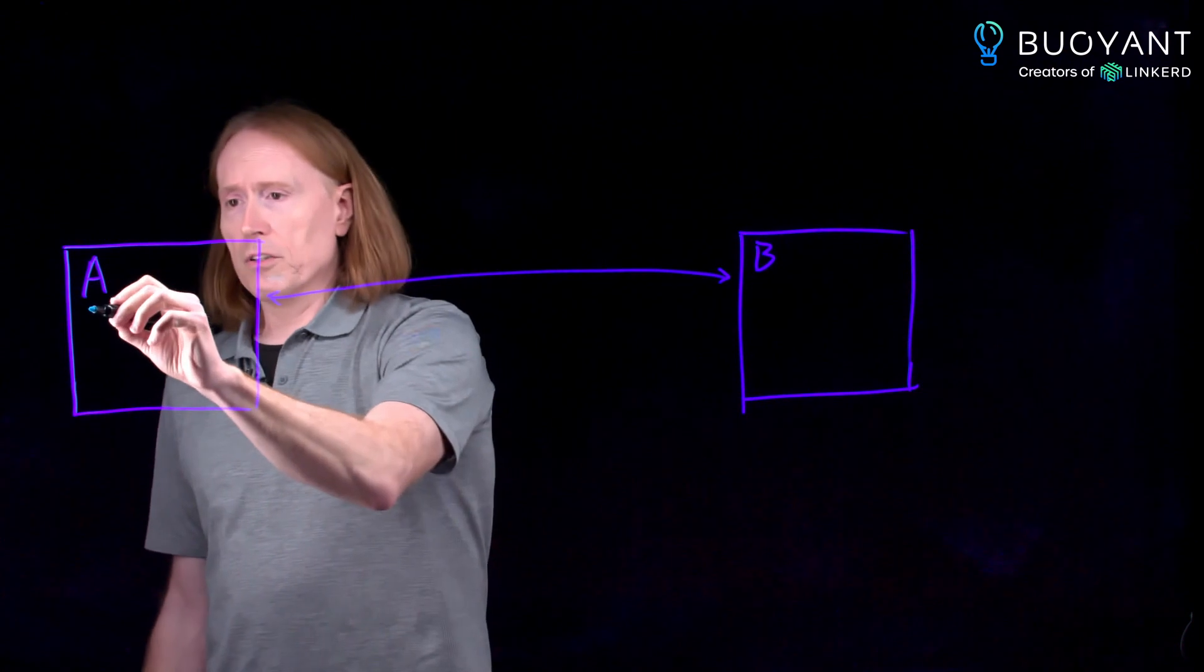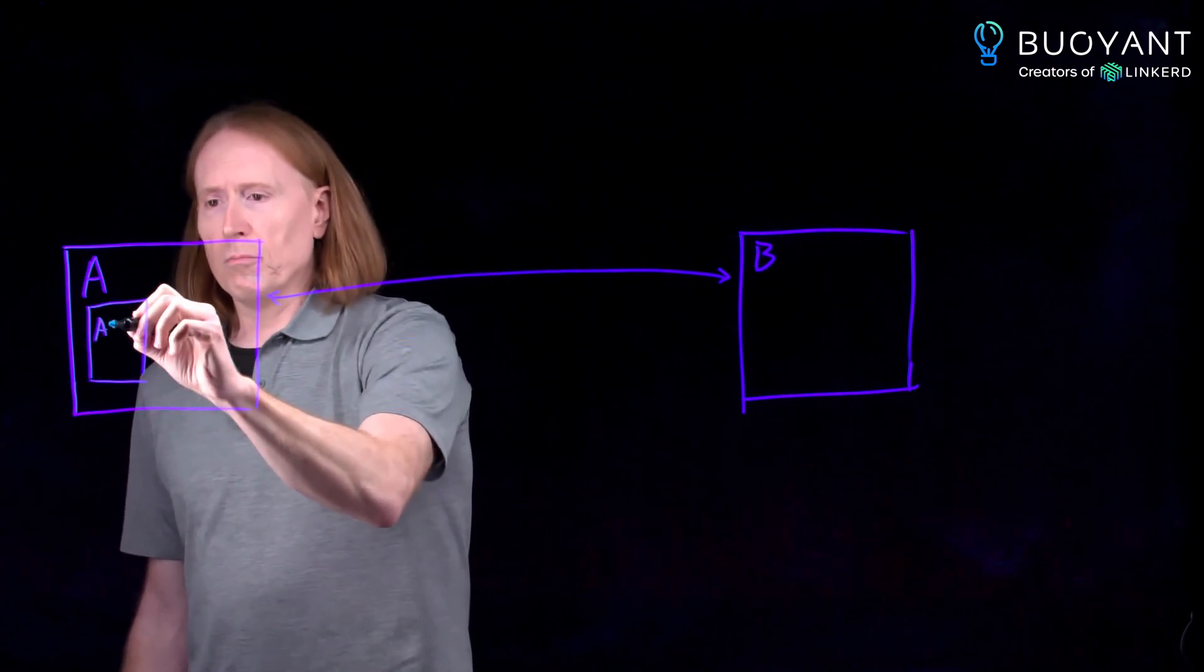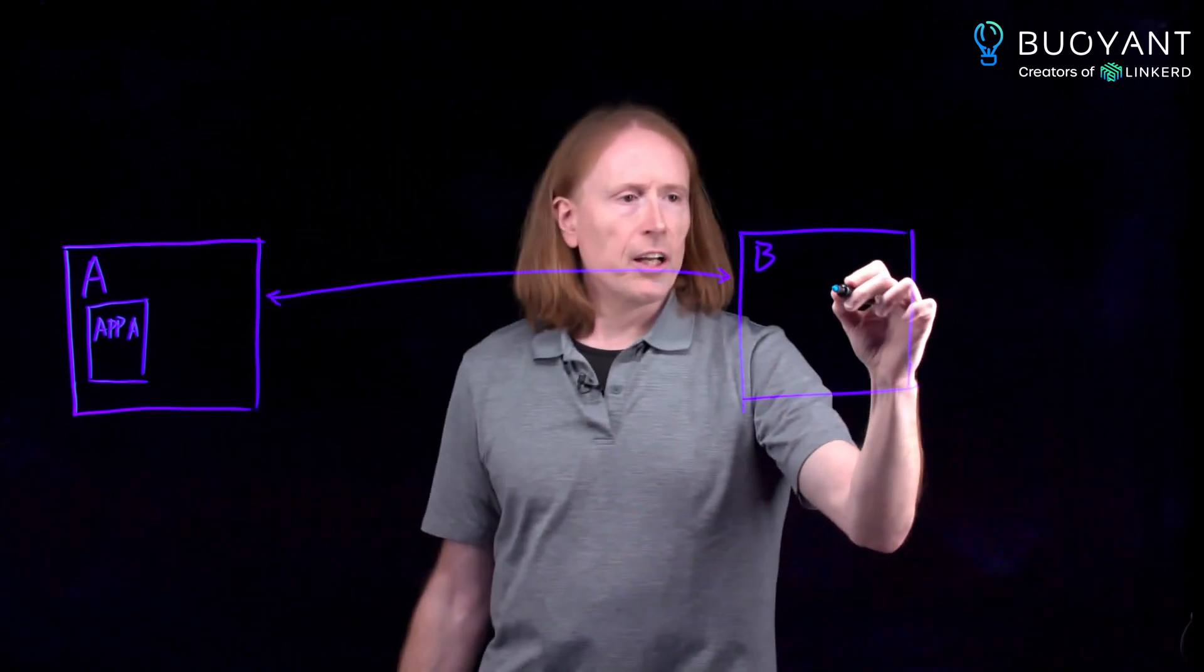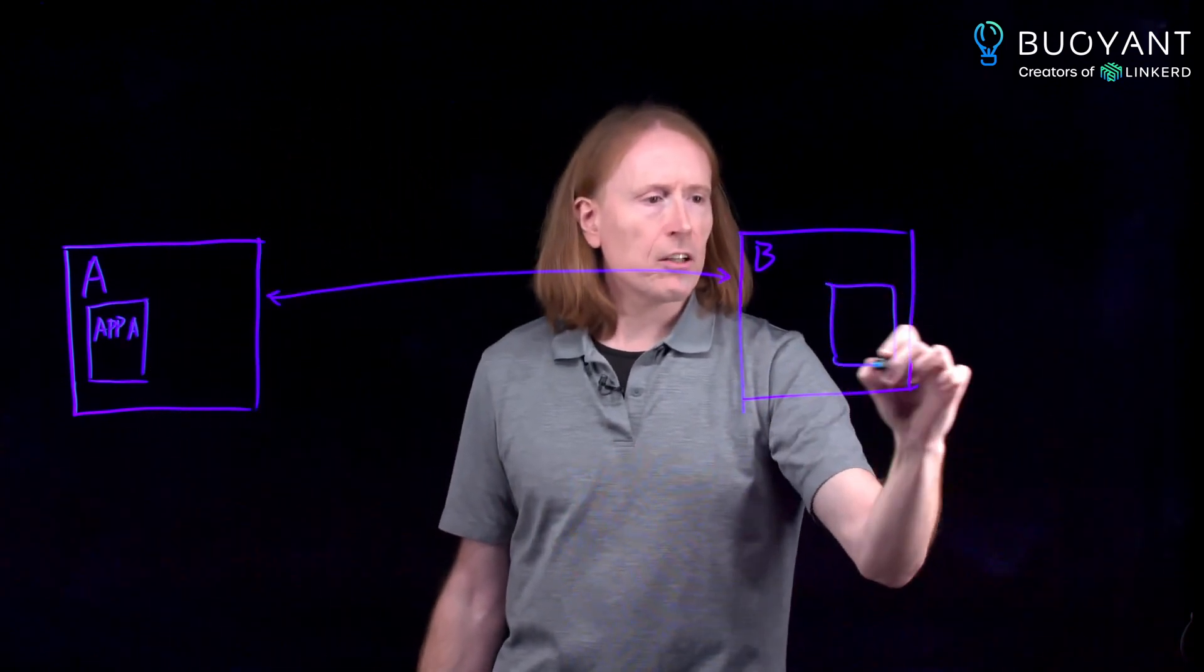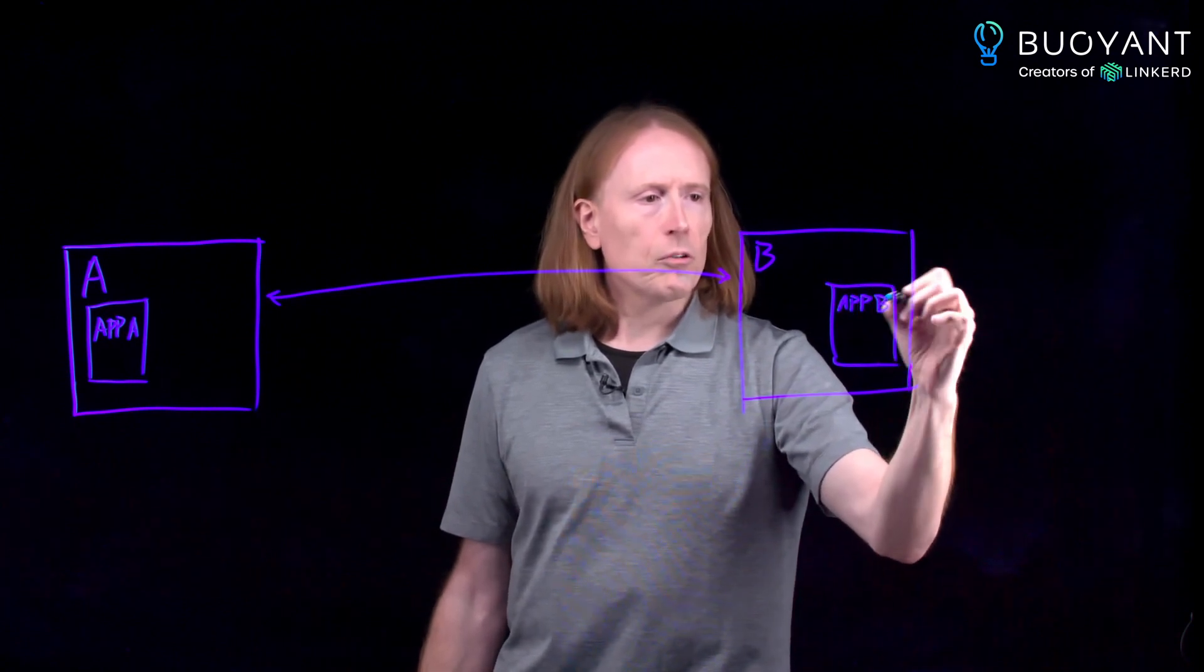Inside, of course, we have the application container. Application A over here, and of course we have a container with application code for workload B over here.